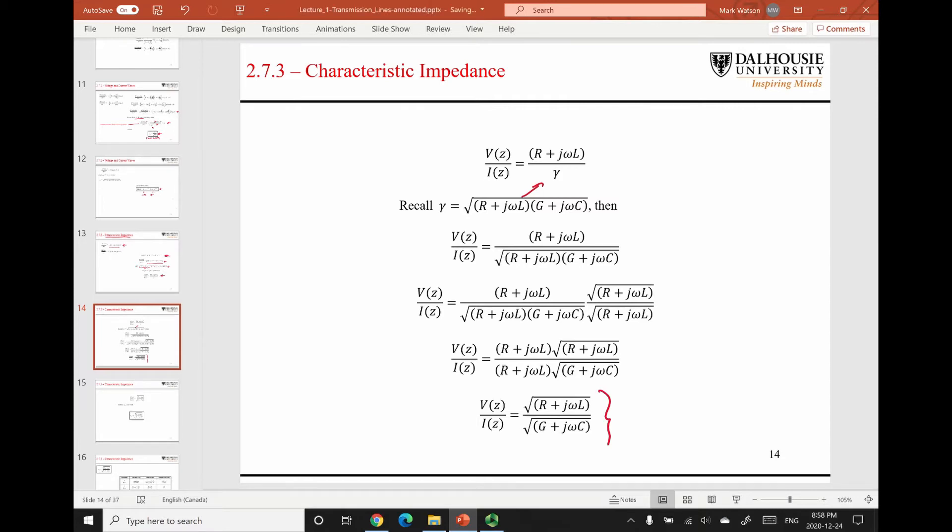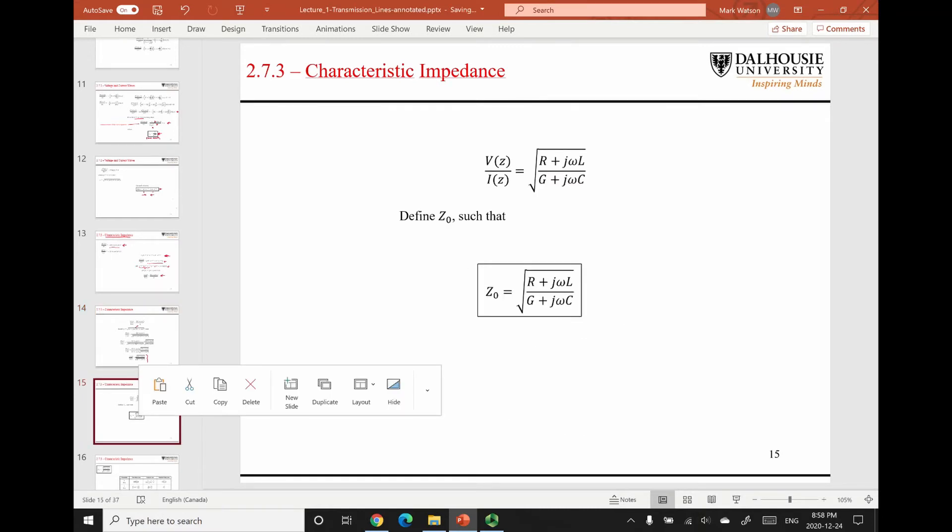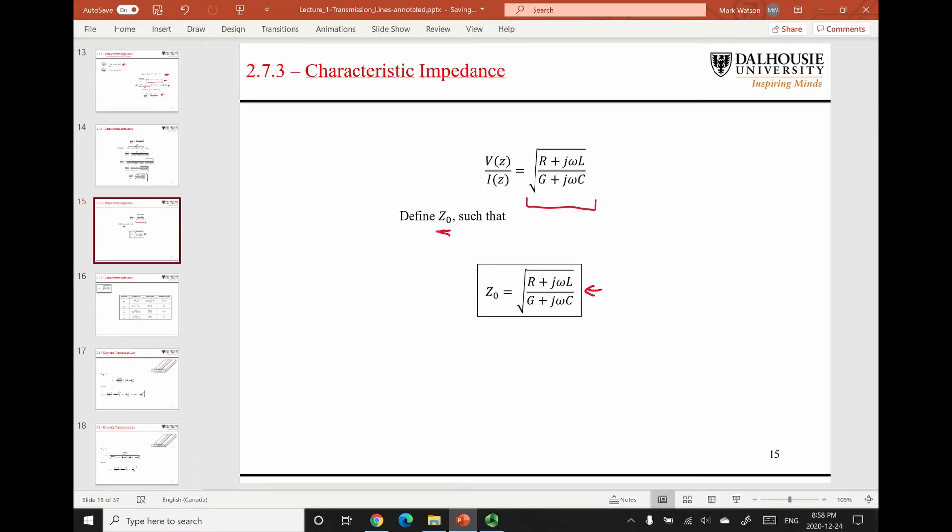We end up with this expression. With this, we define the characteristic impedance as being the ratio of voltage to current. I wanted to point out that we often deal with lossless transmission lines, so these two terms go to zero and our characteristic impedance simplifies to this.